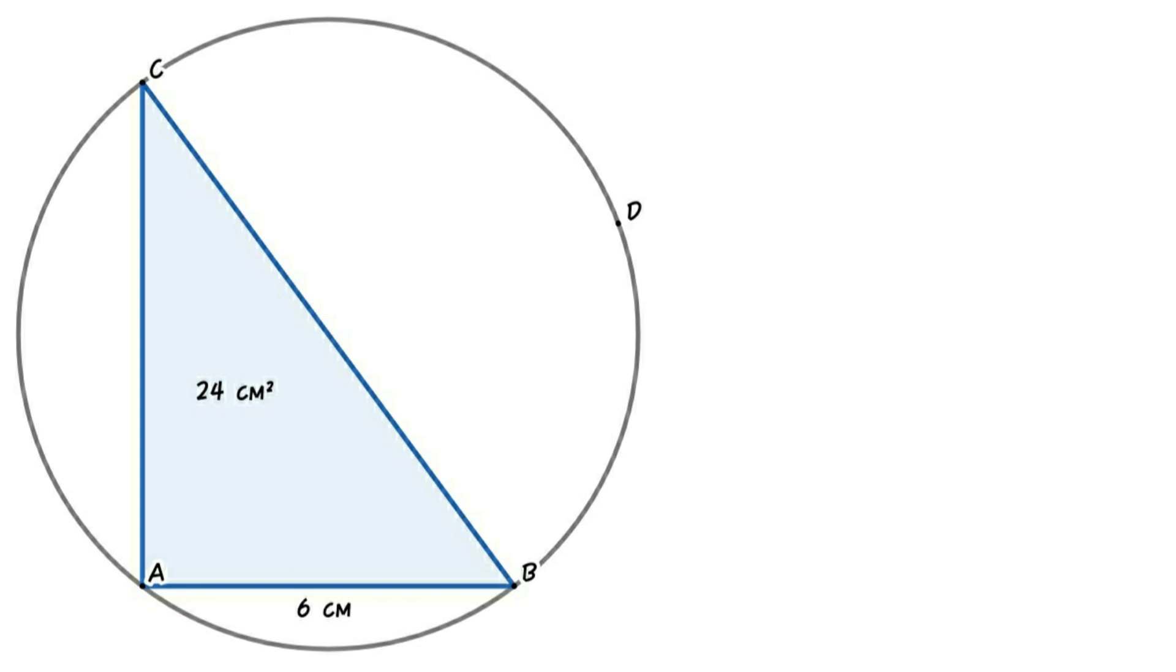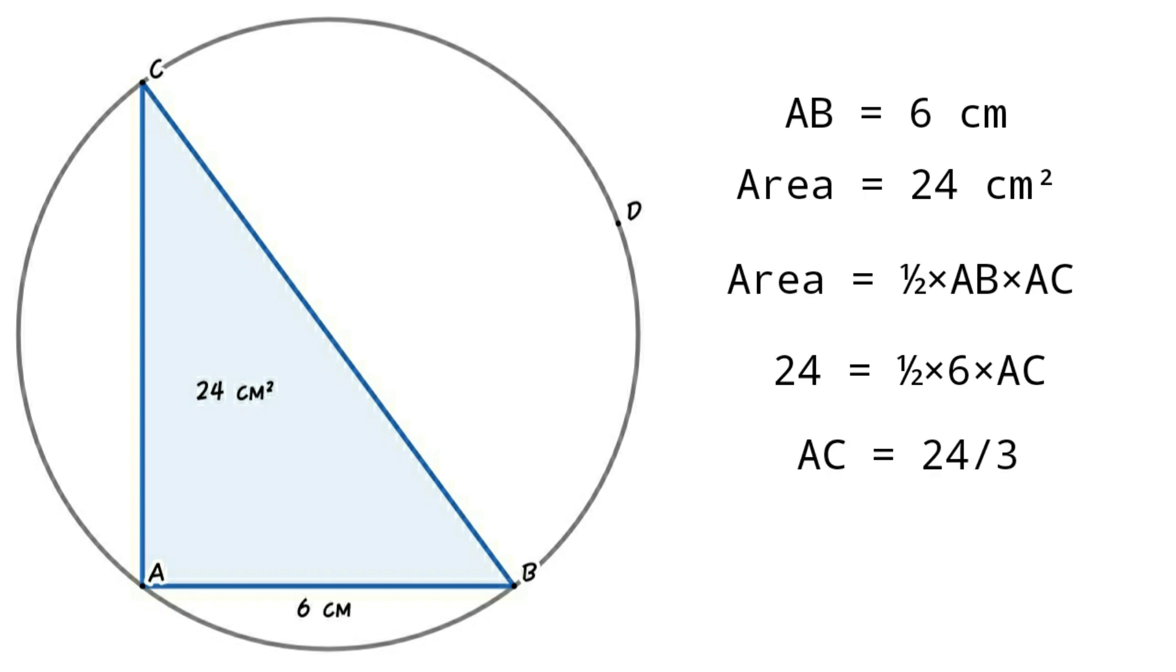For solving this problem, first consider triangle ABC. In triangle ABC, AB equals 6 centimeters and area equals 24 square centimeters. So area equals one-half times AB times AC. That is, 24 equals one-half times 6 times AC. So AC equals 24 divided by 3, or AC equals 8 centimeters.